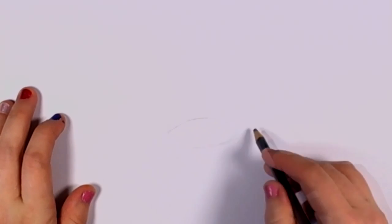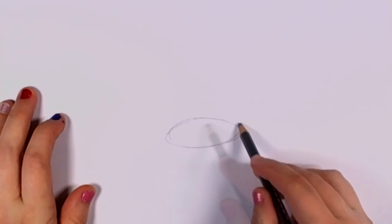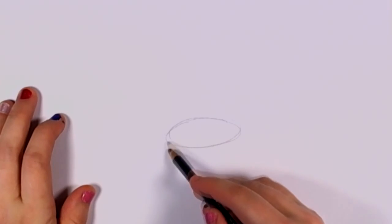Start by drawing an oval shape, like a really stretched oval shape. That's going to be your gold.